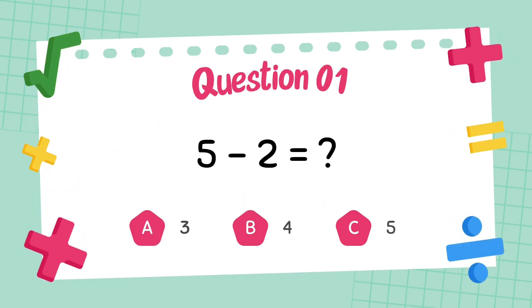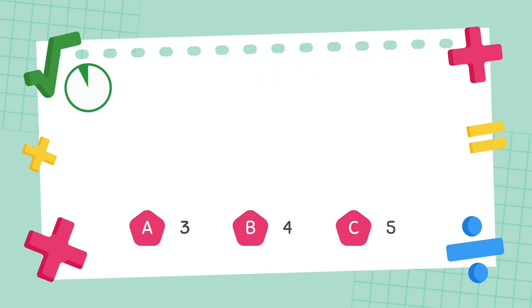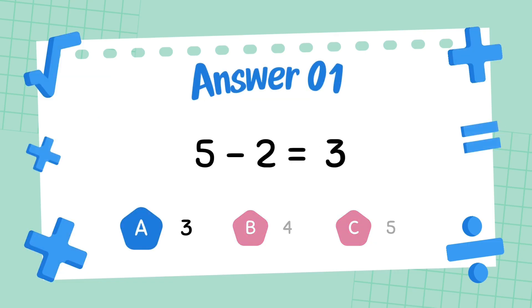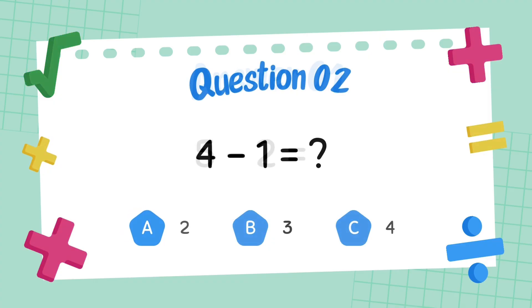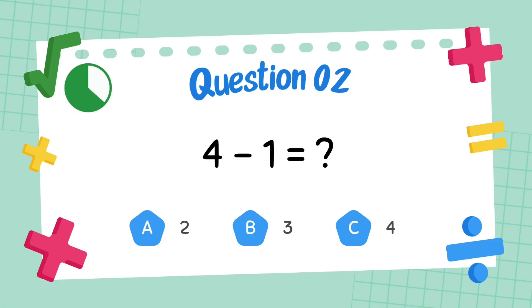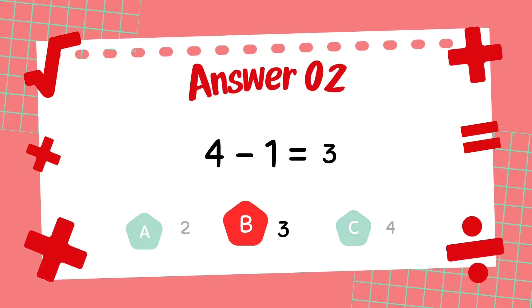What is 5 minus 2? The answer is 3. What is 4 minus 1? The answer is 3.